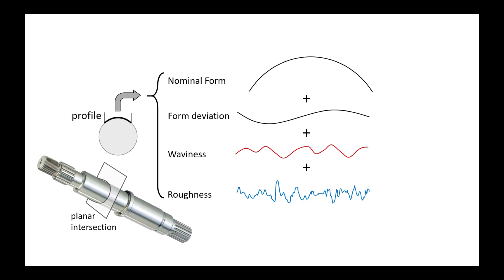The three last components, form deviation, waviness and roughness are identified and separated using filters, each one configured with a specific cutoff. The form is usually removed using an association, for example with the least squares method.